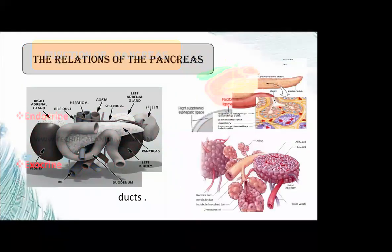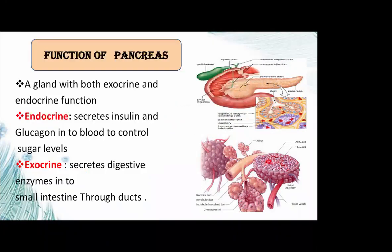The function of the pancreas includes both exocrine and endocrine functions. Endocrine function involves secreting insulin and glucagon into blood vessels to regulate blood sugar. Exocrine function involves secreting digestive enzymes into the small intestine through the duct, produced by acinar cells and ductal cells.